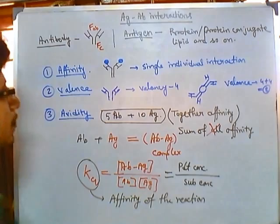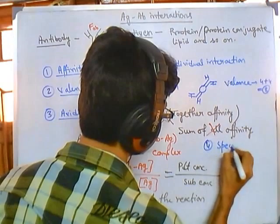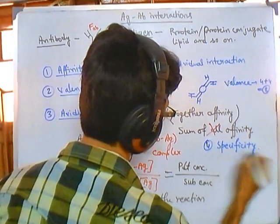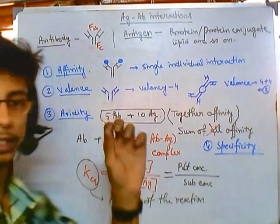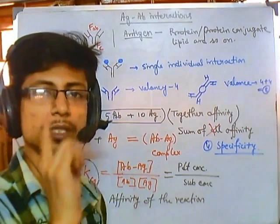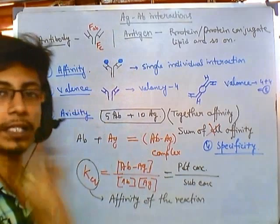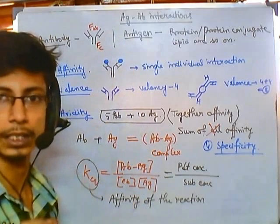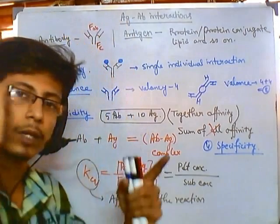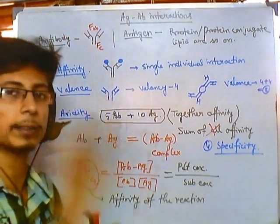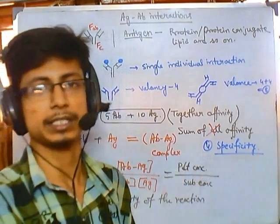Another important thing I must tell you is about specificity. Specificity means that one type of antibody is destined to attach with a particular type of antigen only. The antibody's FAB region is very, very specific — it will only recognize a particular type of antigen and bind with that antigen. So they are very, very specific. This is a very important concept about the antigen-antibody reaction — that they are highly specific.